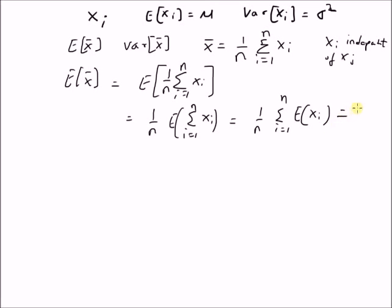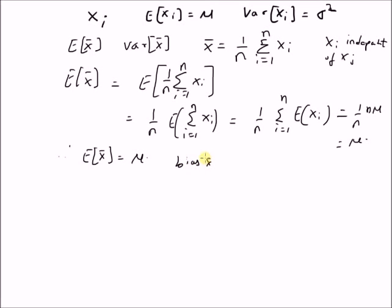By definition, expectation of X_i is mu. So this is equal to 1/n times n times mu, which is equal to mu. Therefore, expectation of X-bar is equal to mu, which basically proves that the bias of the sample mean is equal to 0.